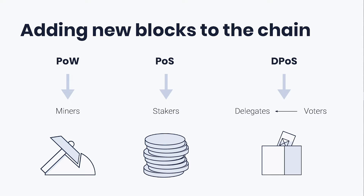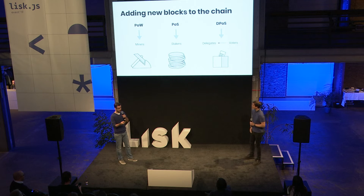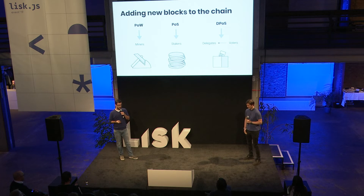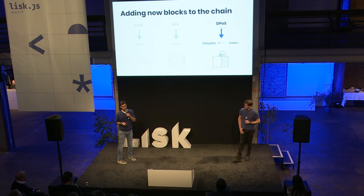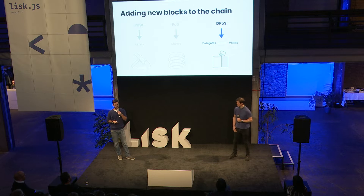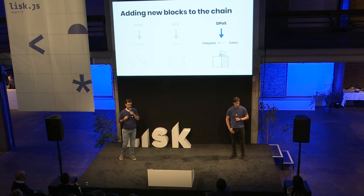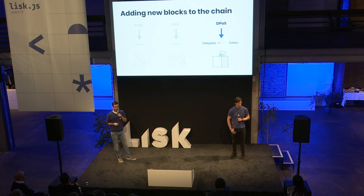The problem is who adds new blocks to the chain. In proof-of-work, as with Bitcoin, miners add new blocks with a probability related to computing power. In proof-of-stake, stakers do so with a probability correlated to the stake — in other words, to the balance or amount of tokens they own. But in delegated proof-of-stake, delegates are in charge of doing so with the support of voters. LISC uses DPoS as its consensus mechanism, and today we are going to talk about the improvements we are proposing for this network.